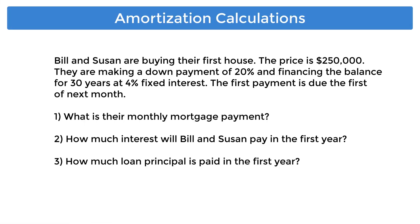Let's take a look at the following financial scenario. Bill and Susan are buying their first house. The price is $250,000. They are making a down payment of 20% and financing the balance for 30 years at 4% fixed interest. The first payment is due the first of next month. You will find the answers to the following questions: What is their monthly mortgage payment? How much interest will Bill and Susan pay in the first year? How much loan principal is paid in the first year?